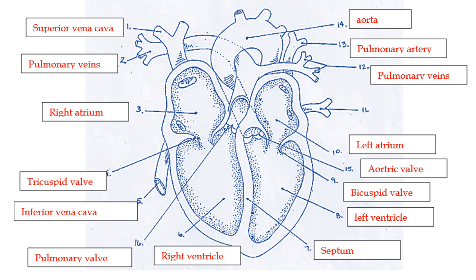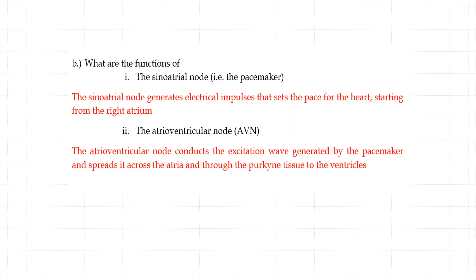Two key things I know students struggle with: in this part of the workbook I didn't give questions like 'what does the pulmonary valve do?' because students often miss the key aspects, which are the functions of the sinoatrial node — the SAN — and the atrioventricular node — the AVN. The SAN generates electrical impulses that set the pace for the heart, establishing what we call the excitation wave. If it doesn't function properly, the heart will not beat in a regular pattern, which creates problems for the person.